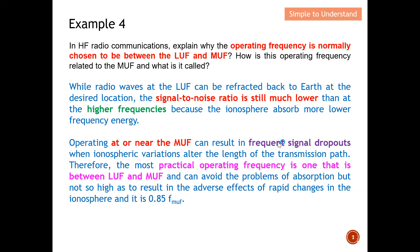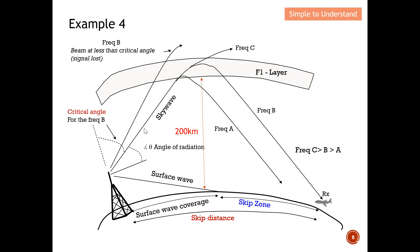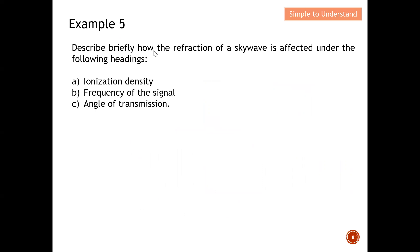Looking at the diagram: if we use the maximum usable frequency and atmospheric variation causes the wave to travel a longer path and reflect further away, the skip distance increases and we lose contact with an aircraft that was previously reachable. This is the undesired effect of operating at the MUF. Therefore the recommended guide is to use 0.85 times the MUF to maintain reliable communication. That concludes example four.